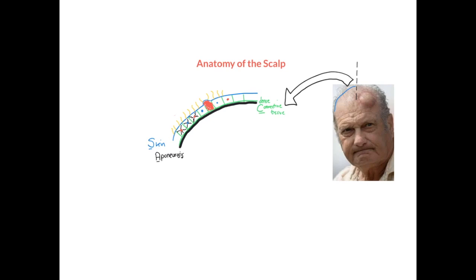These first three layers — the skin, the dense connective tissue layer, and the aponeurosis — act almost as a single functional unit. Because of the dense connective tissue layer, there is very strong adherence between the skin and the deeper aponeurotic layer. Thus, in certain scalping injuries where a large proportion of someone's hair gets trapped in machinery and significant force is applied, these three layers can become avulsed and stripped away from the top of the head as a collective set of layers.